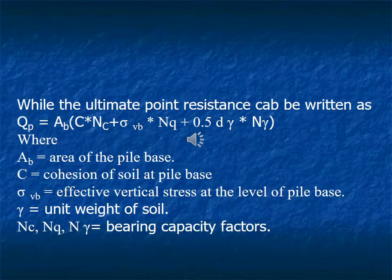The ultimate point resistance can be written as: Q_b = A_B (c·N_c + σ_vb·N_q + 0.5·d·γ·N_γ), which is similar to the shallow foundation bearing capacity equation. Here c is the cohesion of the soil at the pile base, A_B is the area of the pile at the base, σ_vb is the effective vertical stress at the level of the base, γ is the unit weight of soil, and N_c, N_q, N_γ are bearing capacity factors.